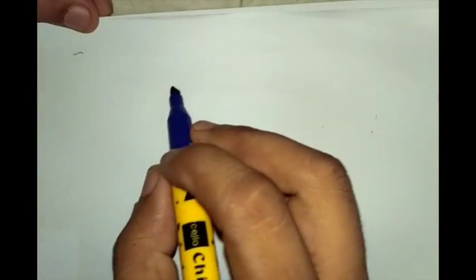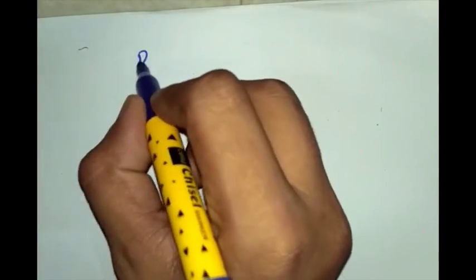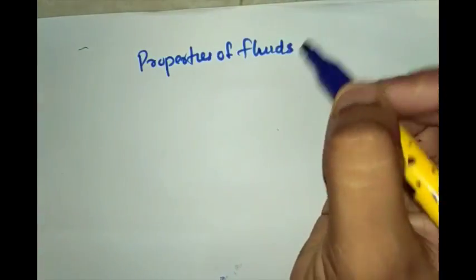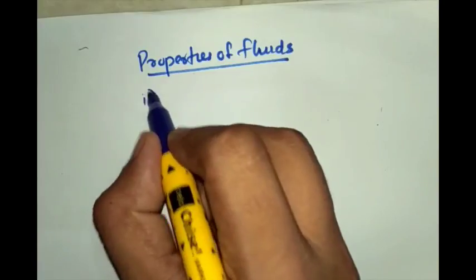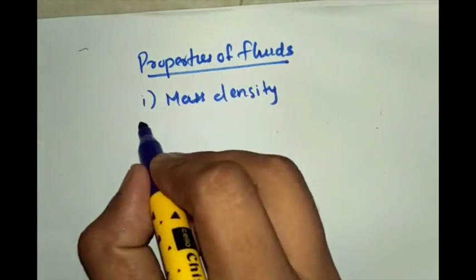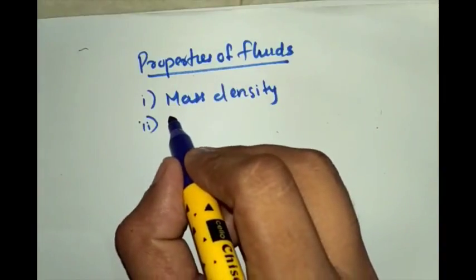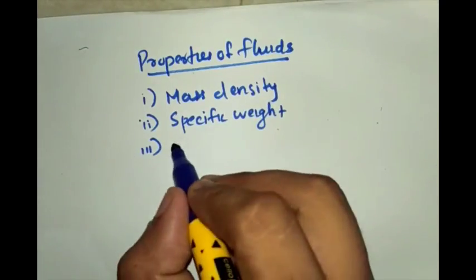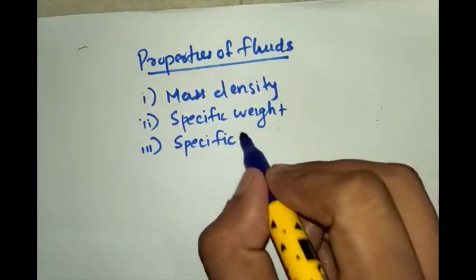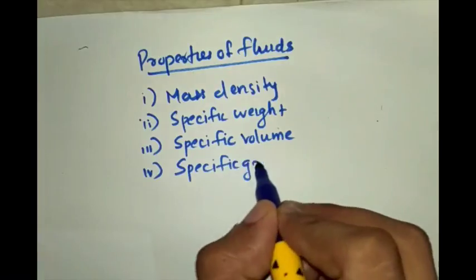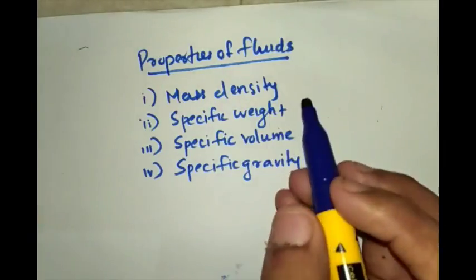Hello friends, in this tutorial we will be learning the four properties of fluids: first one mass density, second one specific weight, third one specific volume, and the fourth one is specific gravity.